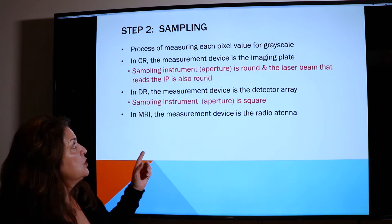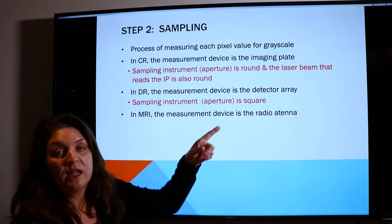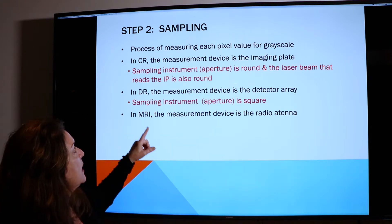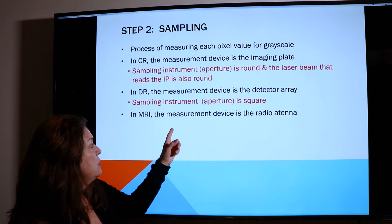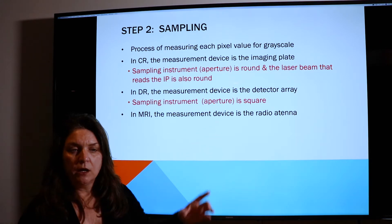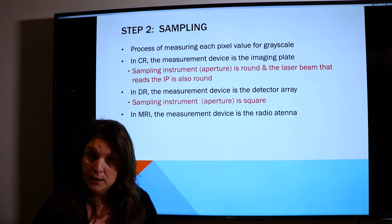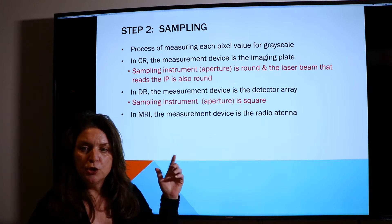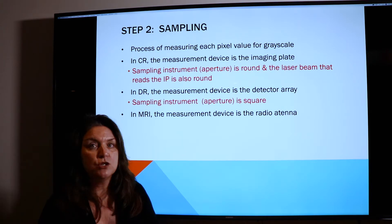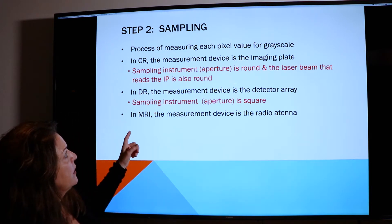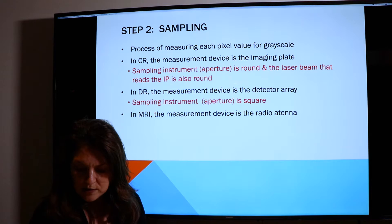The sampling portion is where an instrument actually measures the pixels and the grayscale level. The sampling instrument for CR is round. The sampling instrument used for DR is square, and that's important because in DR our detectors are square or rectangular, and the monitors are rectangular. So you get more detail because the measurement tool is square, matching all the pixels, which are also square. Sampling just measures each pixel for its grayscale.